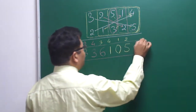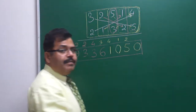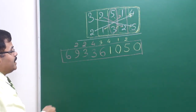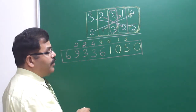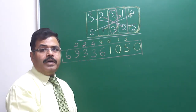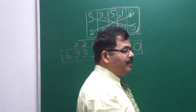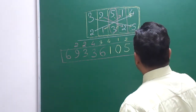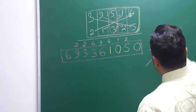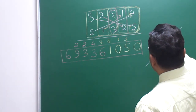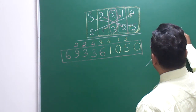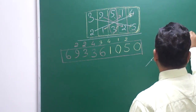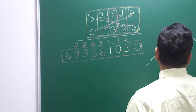So this is the product of a five-digit number times a five-digit number in quick seconds: 6, 9, 3, 3, 6, 1, 0, 5, 0. That is the answer. I hope you understand how to deal with each step — first step, second step, third step, fourth step, and fifth step.